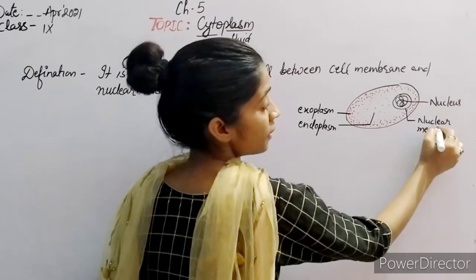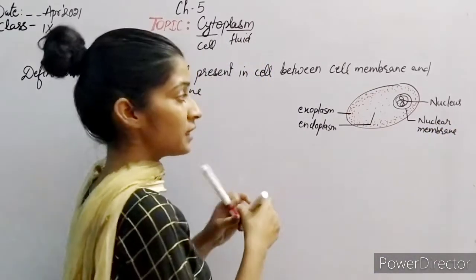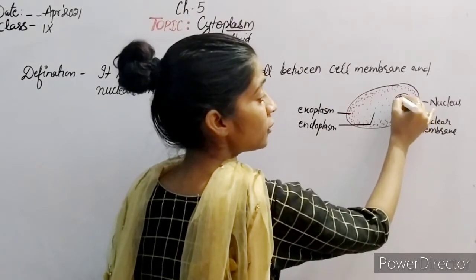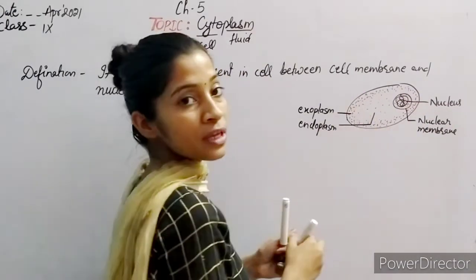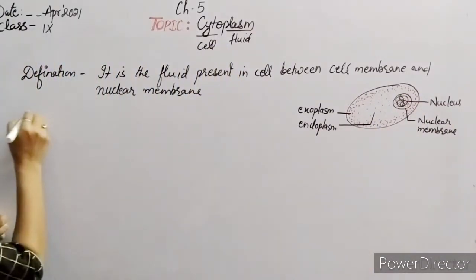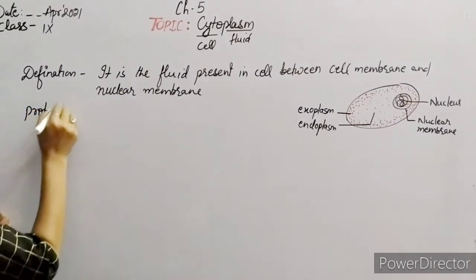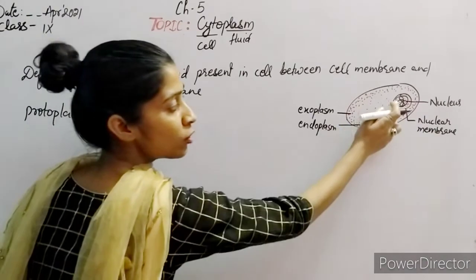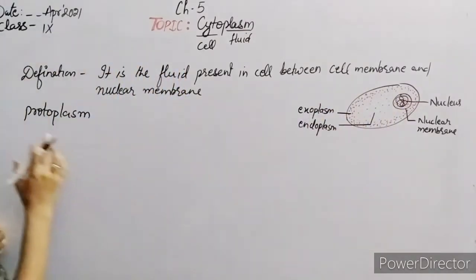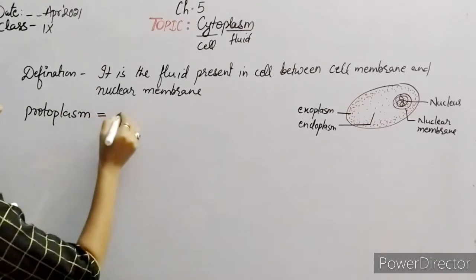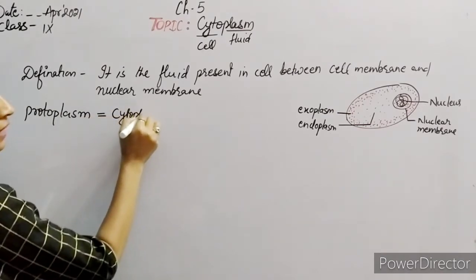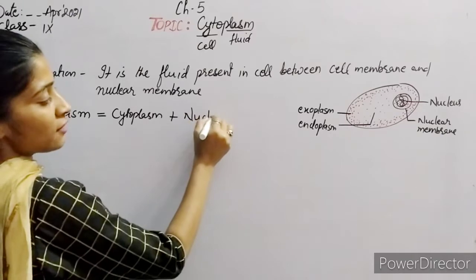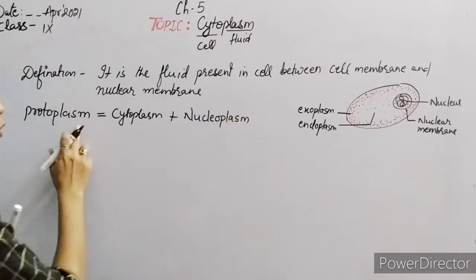So this fluid present between the cell membrane and nuclear membrane is your cytoplasm. Now there is one more fluid which is present inside the nucleus as well. If we include this fluid also, then the total fluid of the cell is called protoplasm.